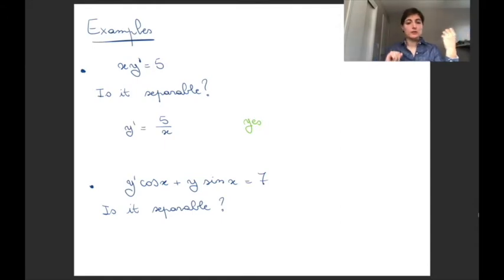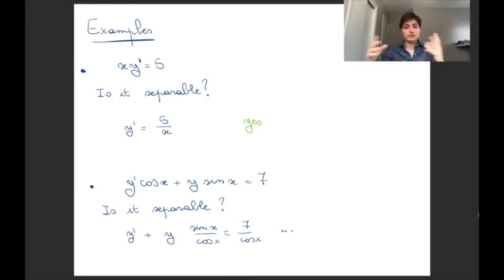Is y'cos(x) + ysin(x) = 7 separable? It's not, because we can wiggle things around, but we never get to the situation in which on one side we only have a function of y times y' and on the other side only a function of x. There is too much intermingling for us to be able to just separate it. So no, this equation cannot be separated.